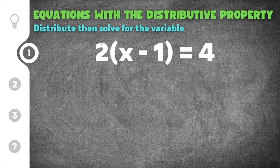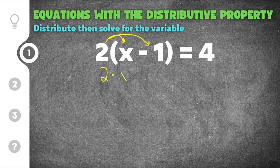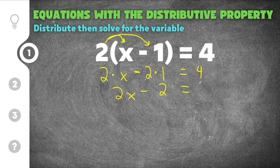The first practice problem gives us 2 times the quantity x minus 1 equals 4. The first step is to take the 2 and distribute it to everything inside of the parentheses. So we do 2 times x, keep the sign in the middle the same — minus 2 times 1 — and that equals 4. Simplifying: 2x minus 2 equals 4.